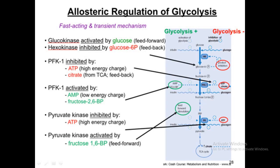If you look at the pathway of glycolysis, where glucose gets converted into pyruvate, you can see that both the activation and inhibition of allosteric enzymes take place. For example, glucose gets converted into glucose-6-phosphate.